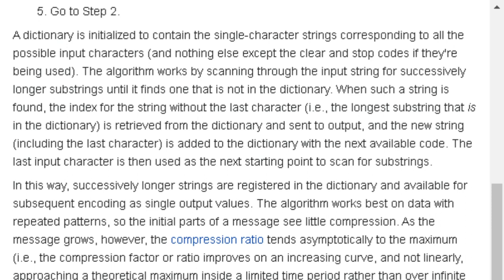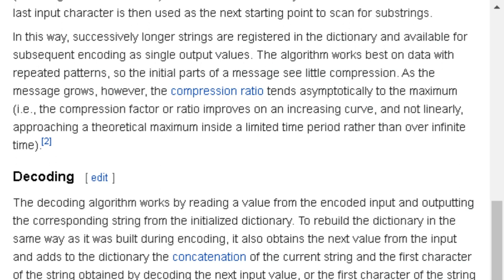In this way, successively longer strings are registered in the dictionary and available for subsequent encoding as single output values. The algorithm works best on data with repeated patterns, so the initial parts of the message see little compression. As the message grows, however, the compression ratio tends asymptotically to the maximum. The compression factor improves on an increasing curve and not linearly, approaching a theoretical maximum inside a limited time period rather than over an infinite time.